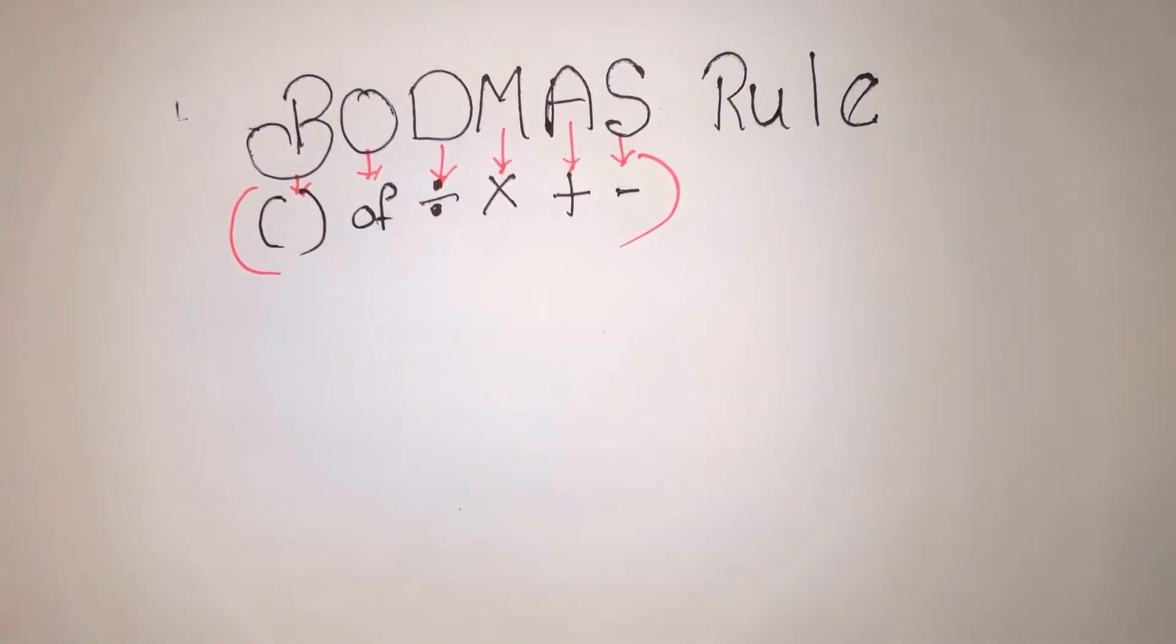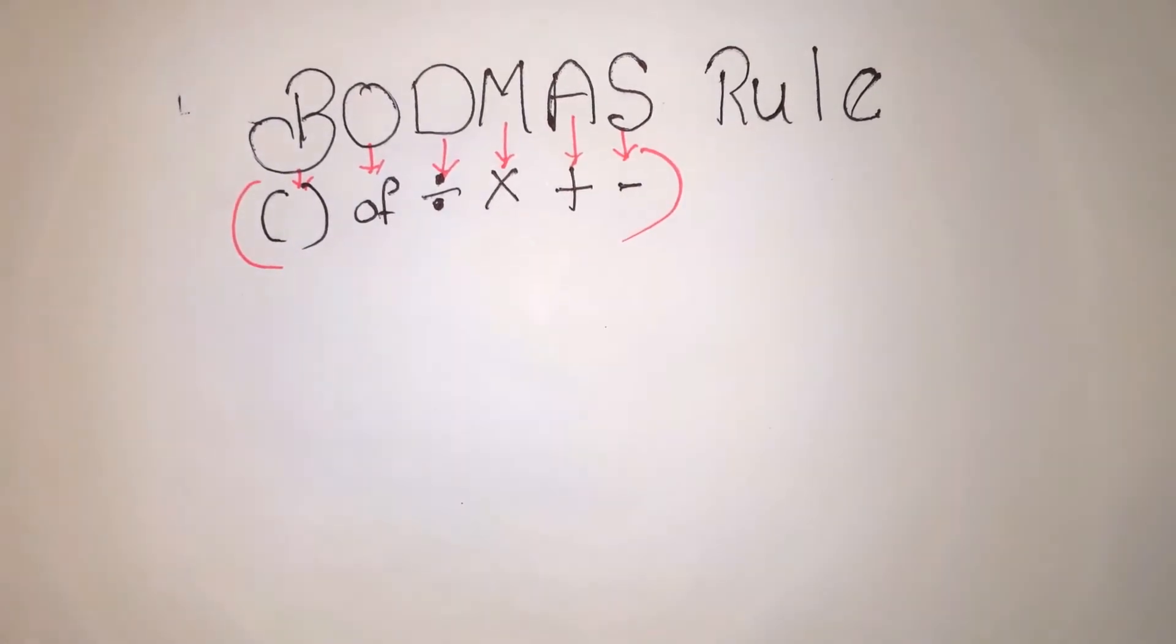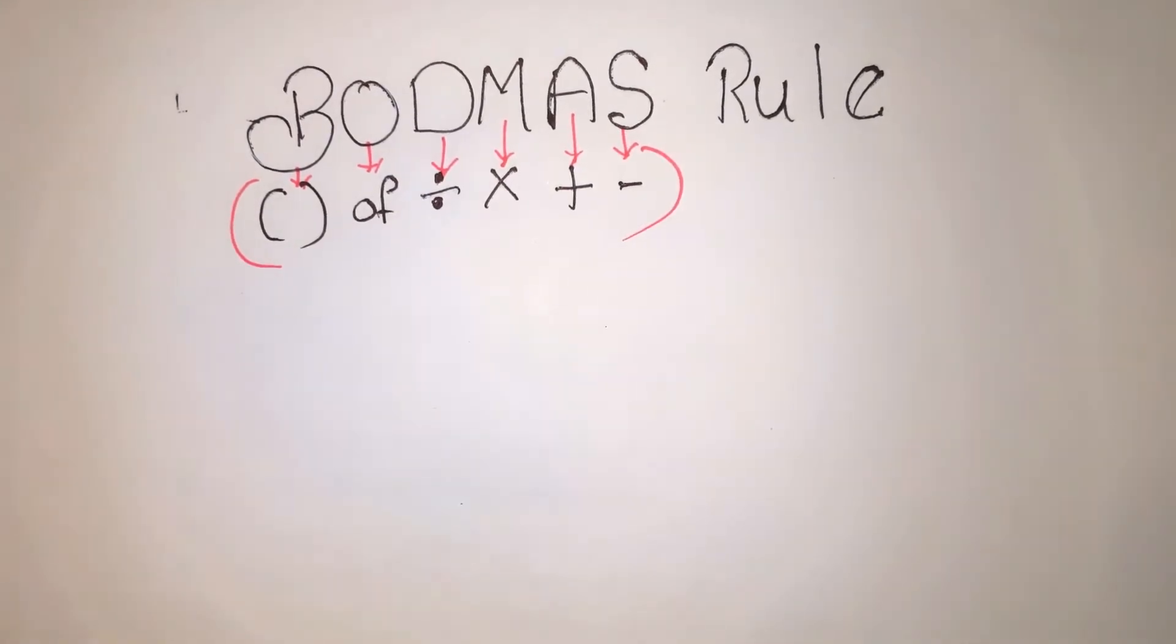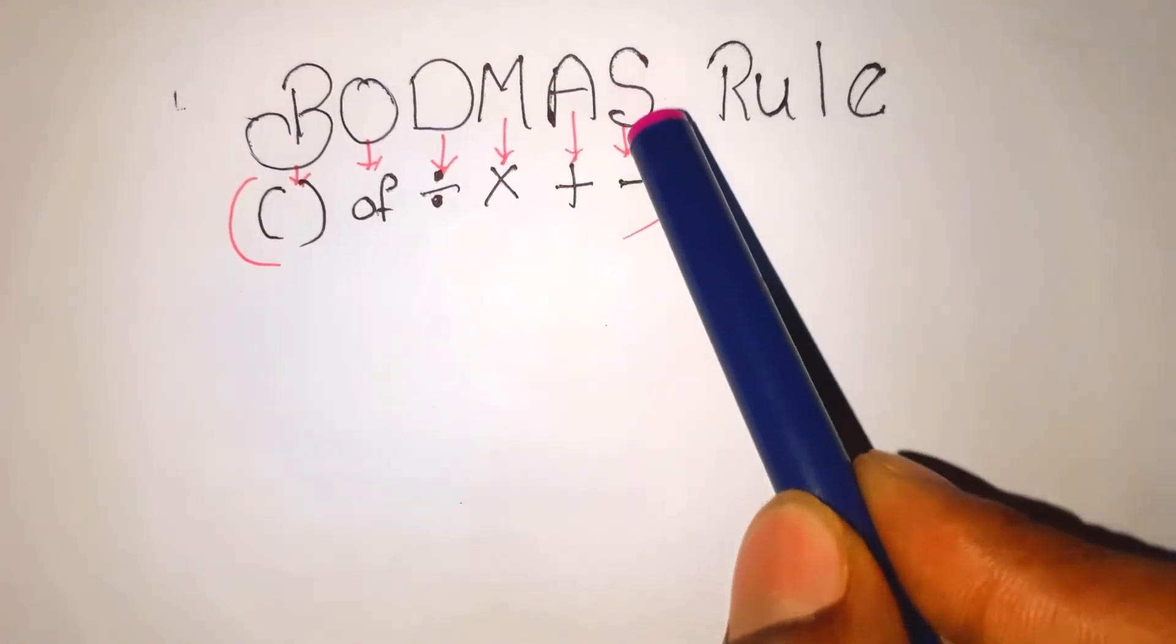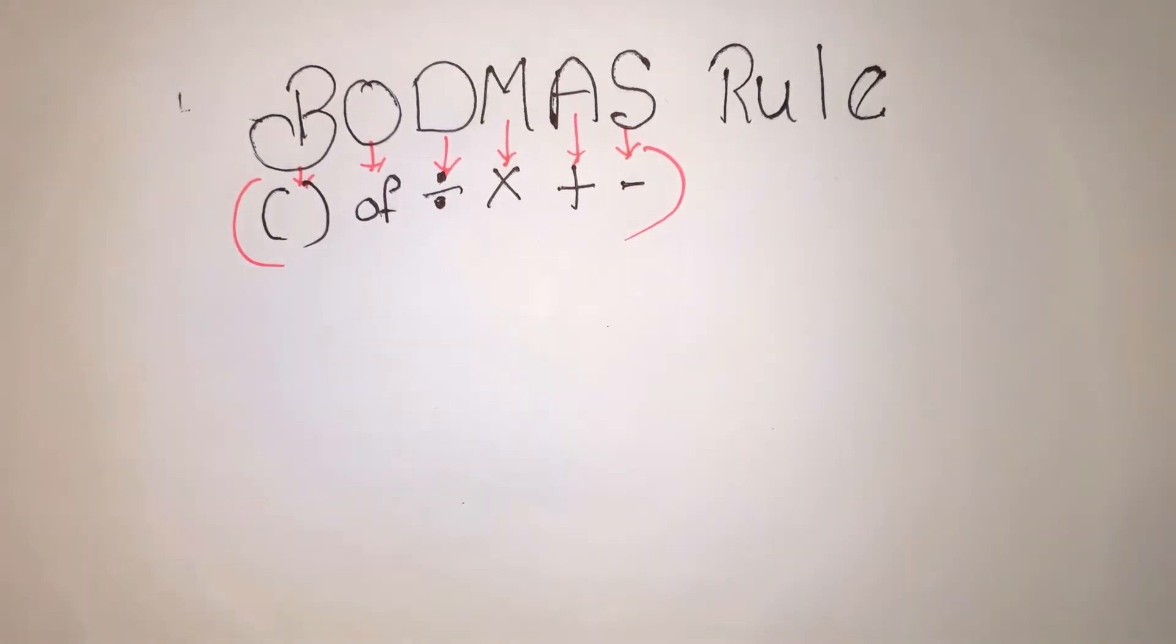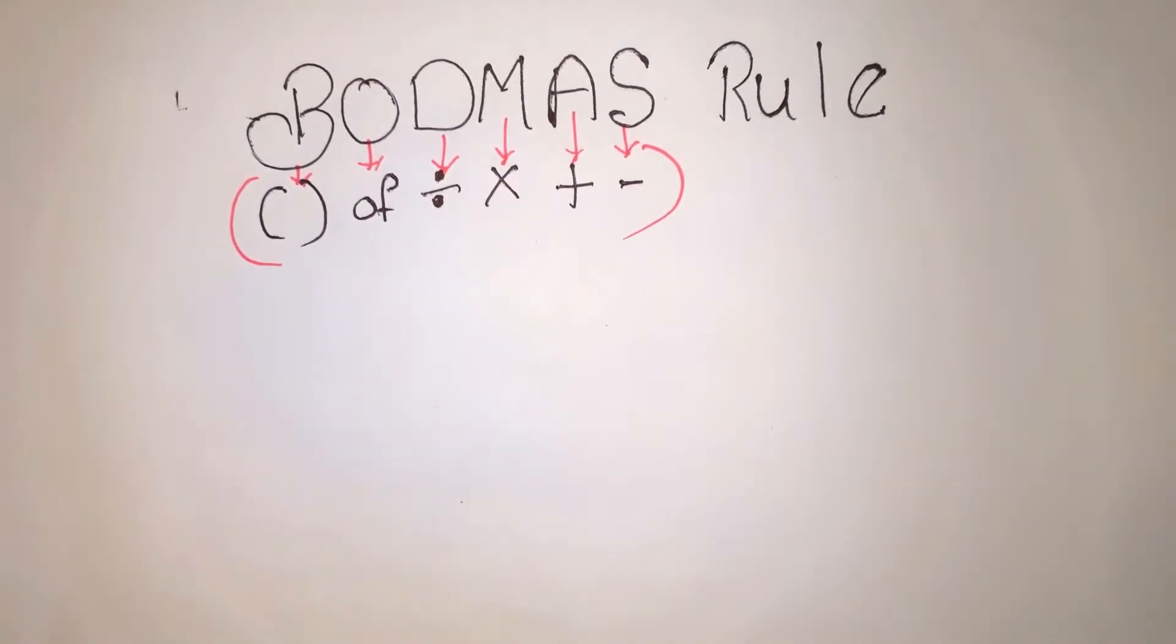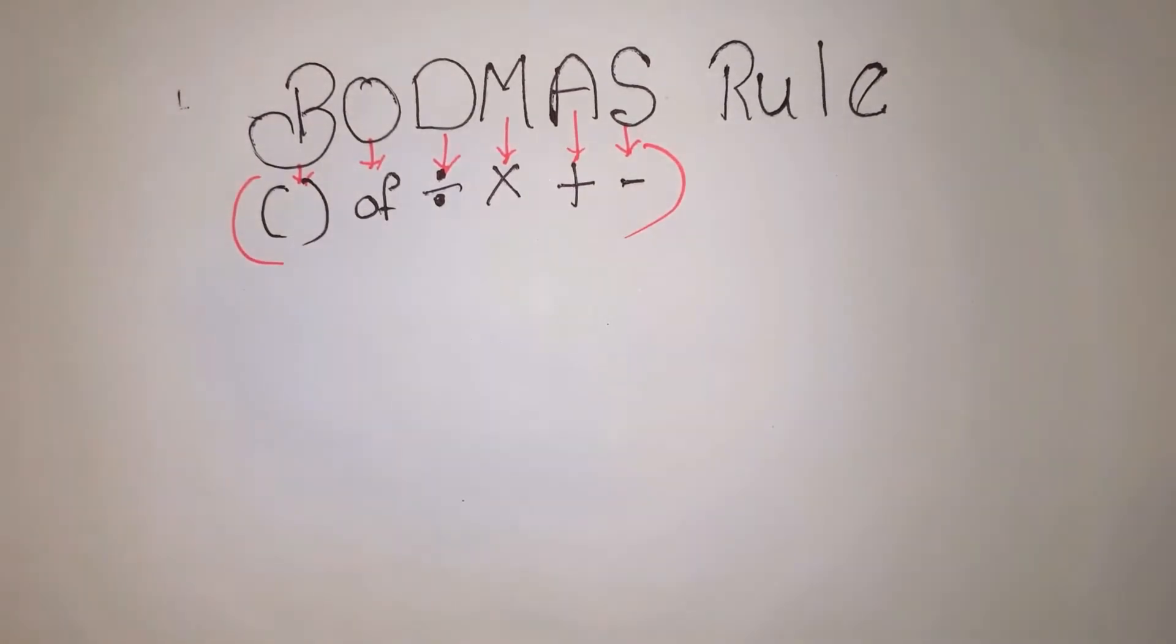Hi, hello friends, welcome to Smart Work YouTube channel. Here is my topic: BODMAS rule. BODMAS stands for Bracket, Of, Division, Multiplication, Addition, Subtraction. This is the order of operations - first division, then multiplication, then addition, then subtraction.